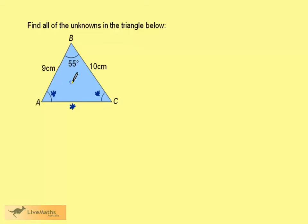Note that we don't know any opposite information. We know the angle 55, but not the length of the side opposite. We know the side here, but not the angle, and the same is true here. That means that we're not going to use the sine rule first.